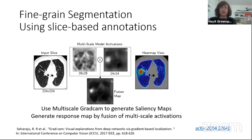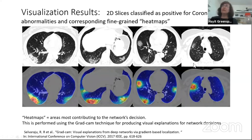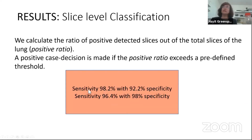With this approach, we can save on annotations and extract very nice output segmentation maps. For each slice, we have a corresponding fine-grained heat map. In terms of classification, for these 2D classification tasks we have very high sensitivity and specificity — you can see two different operating points — making it a very robust classification solution.